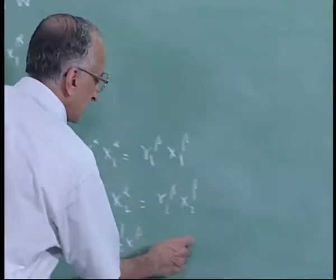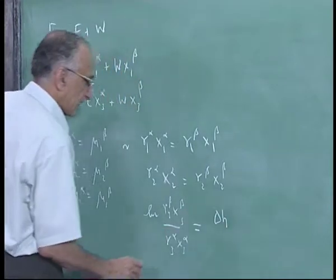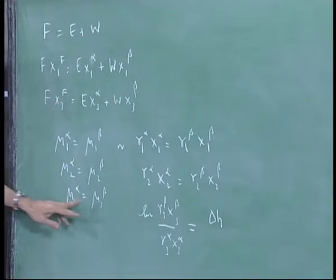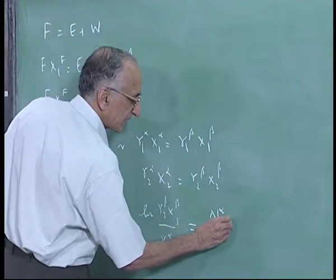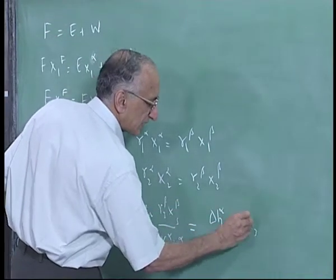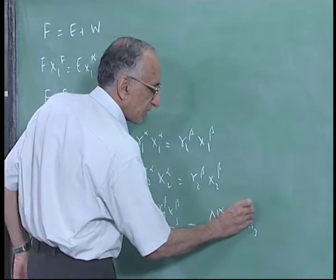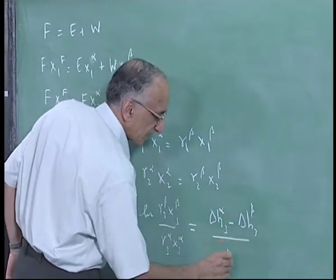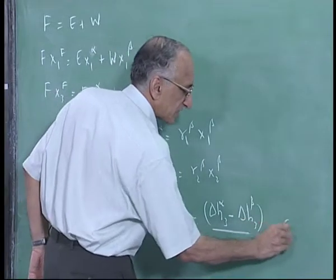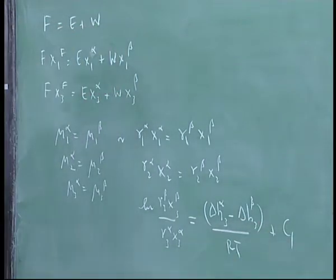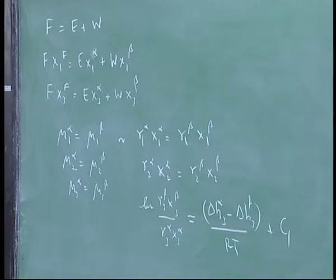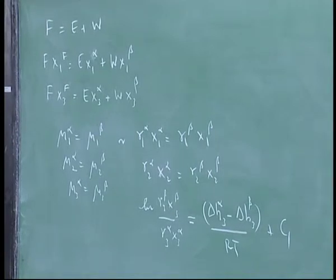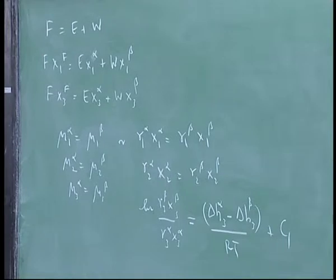If you treat the difference between h3 bar infinity in the alpha phase and the beta phase difference between these two as constant you can integrate this. So you will get essentially delta h this will produce a minus sign so this will be delta h alpha phase minus delta h3 in the beta phase by rt. This is a constant plus some constant C1.